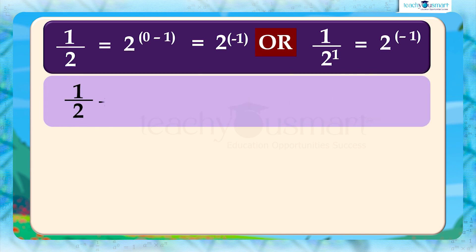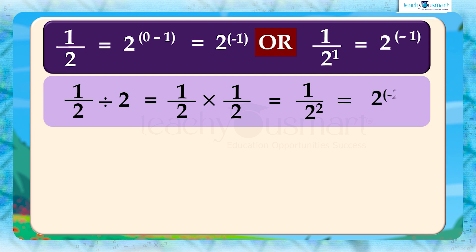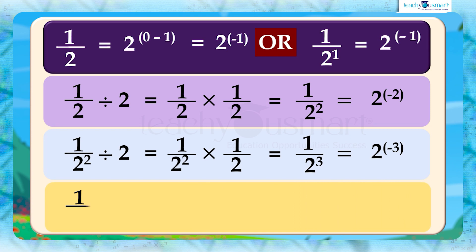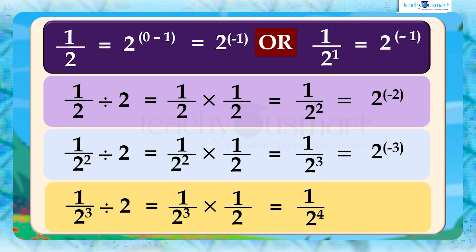Continuing the pattern: 1 by 2 divided by 2 equals 1 by 4, equals 1 by 2 squared multiplied by 1 by 2, equals 1 by 2 cube, equals 2 raised to minus 3. Then 1 by 2 cube divided by 2 equals 1 by 2 cube multiplied by 1 by 2, equals 1 by 2 raised to 4, equals 2 raised to minus 4, and so on.